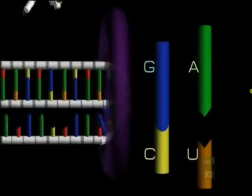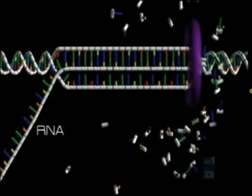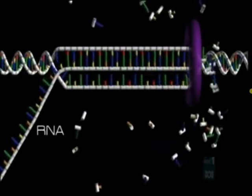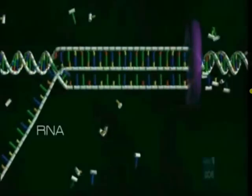C still attracts G, but now A attracts U. And instead of creating a new DNA helix, the RNA peels away, getting longer and longer.